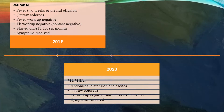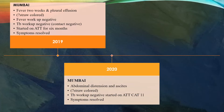She was again admitted in 2020 in Mumbai with abdominal distension and ascites. The ascitic fluid again was straw colored. TB workup again turned out to be negative and she was empirically started on category 2 ATT suspecting relapse, following which the symptoms resolved.